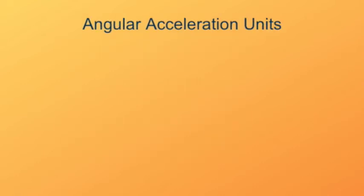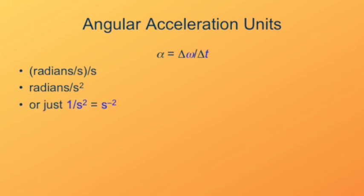The units of angular acceleration are pretty much what you would expect them to be. Since the angular acceleration is the rate of change of angular velocity, it's in units of angular velocity divided by units of time. Angular velocity is radians per second divided by time, that's per second again. So the units of angular acceleration are radians per second squared. Since radians are actually dimensionless, this is also expressed as 1 over second squared, or seconds to the minus 2.